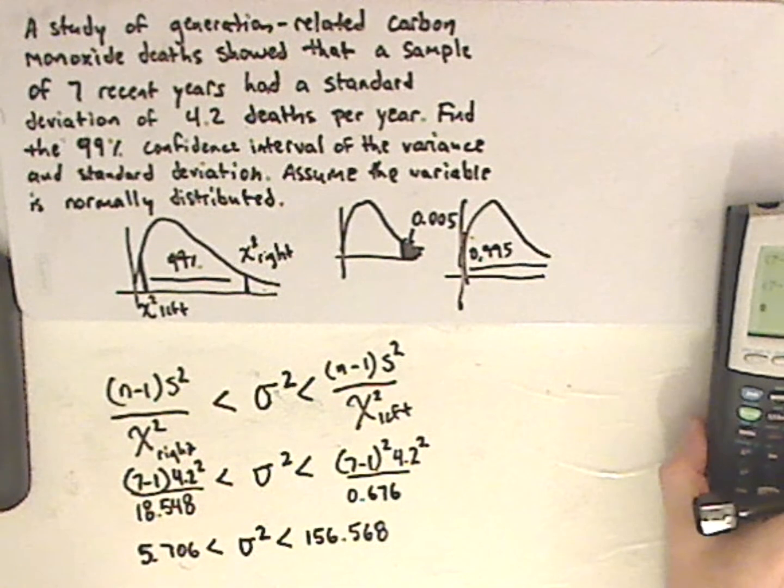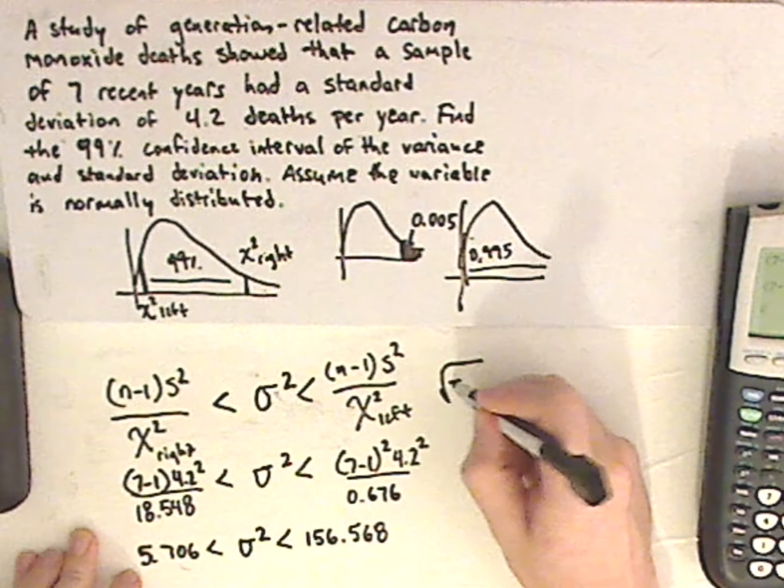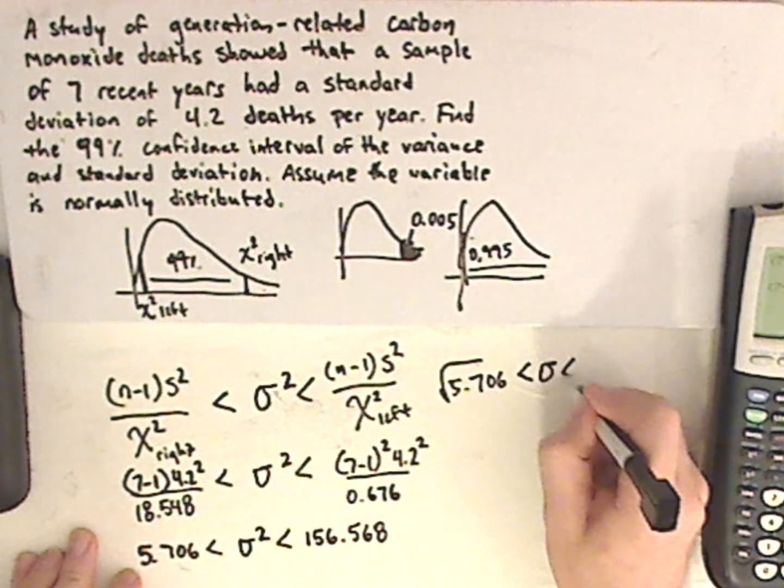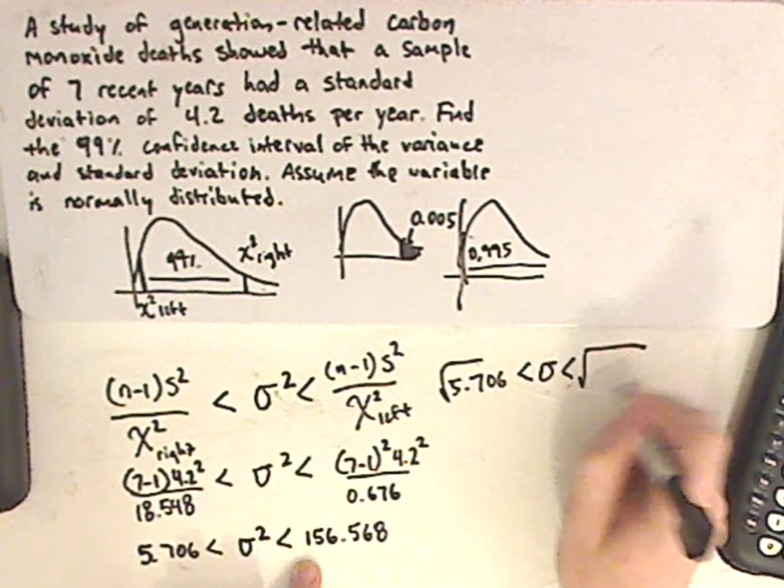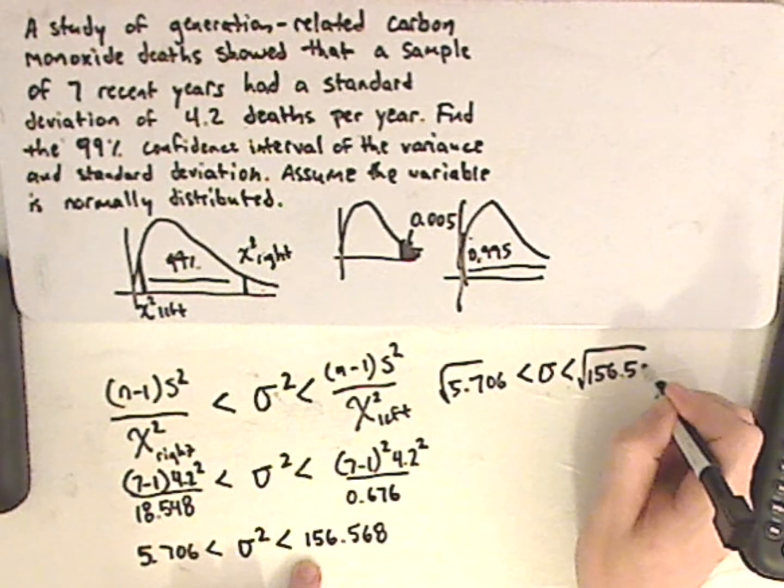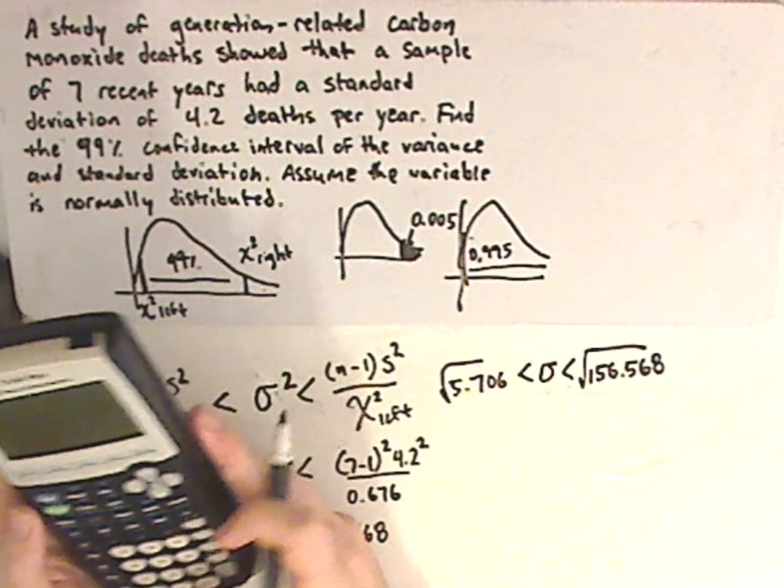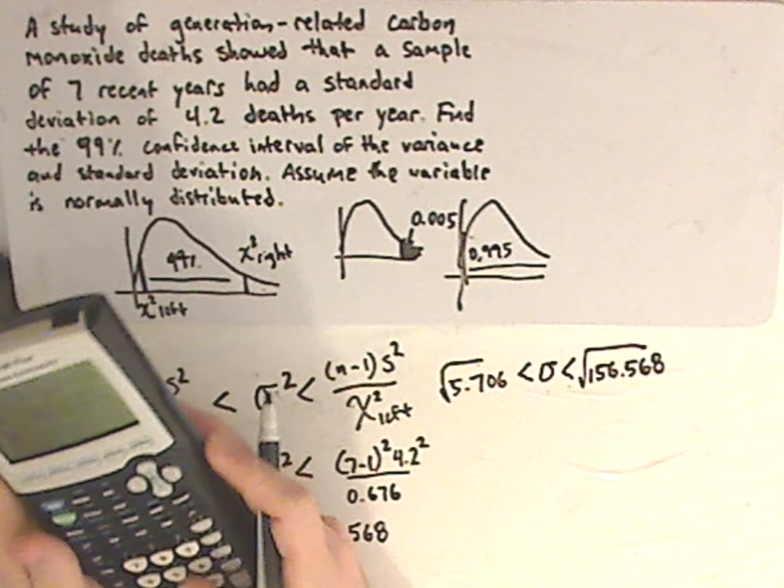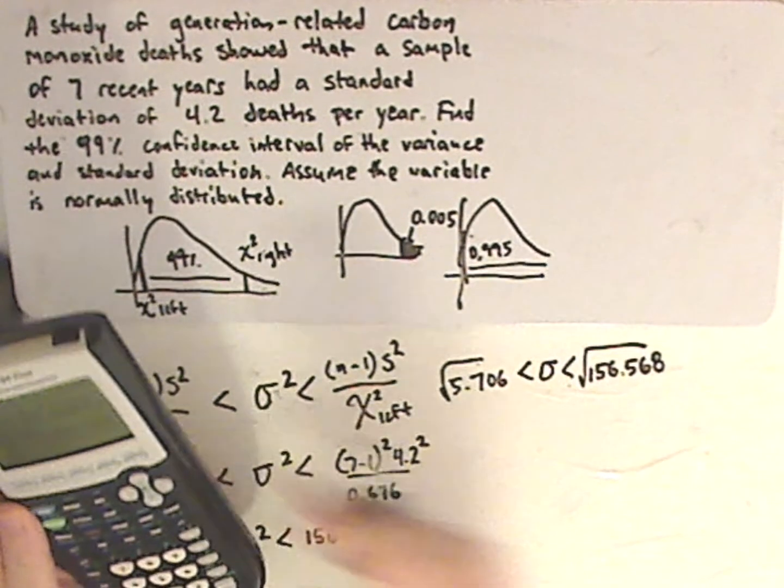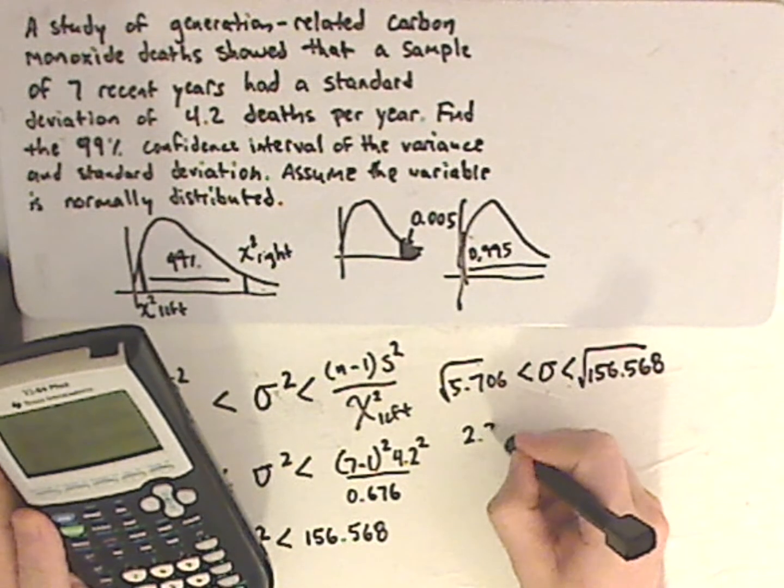For my standard deviation, all I have to do is square root everything. So, it would be the square root of 5.706. And then the square root of 156.568. And so, let me plug those into my calculator. So, the square root of 5.706. That gives me 2.39.